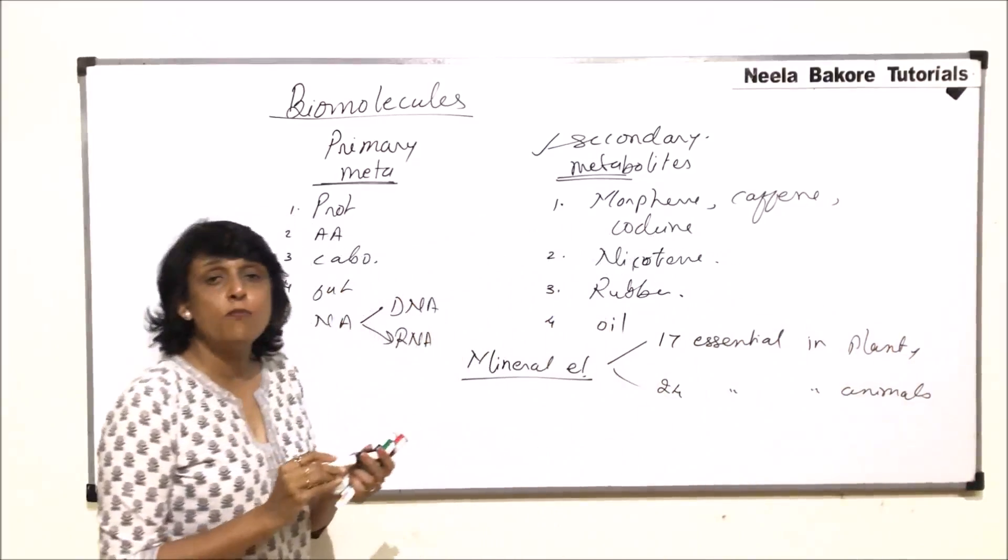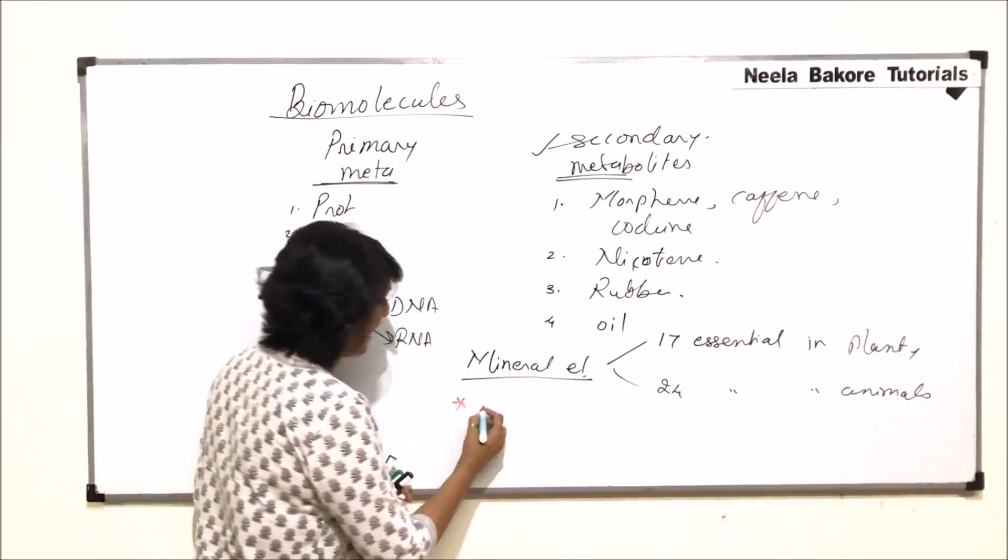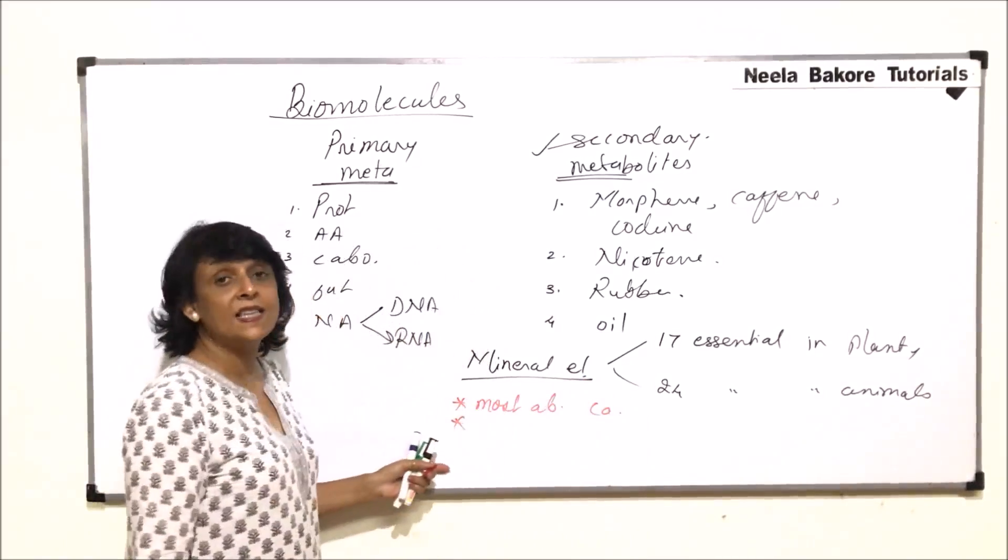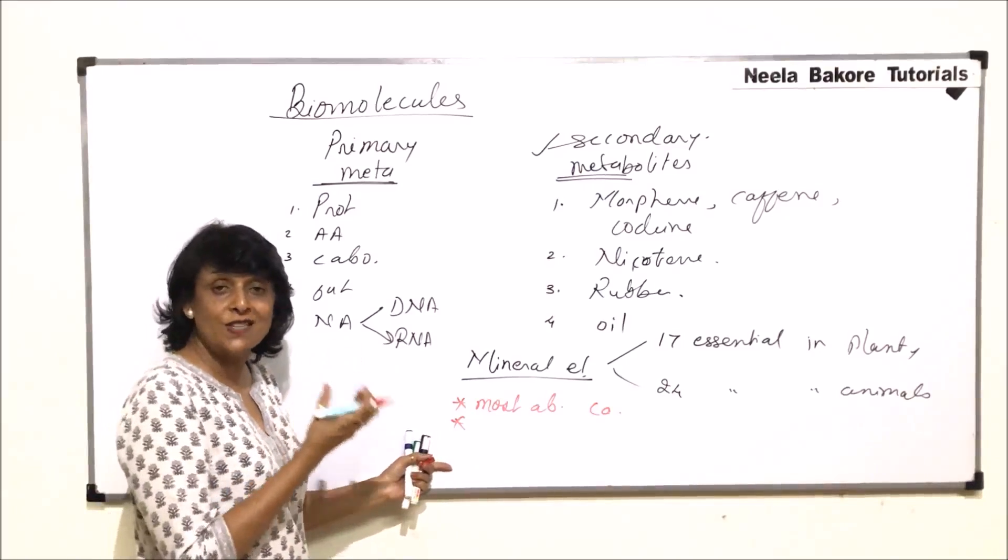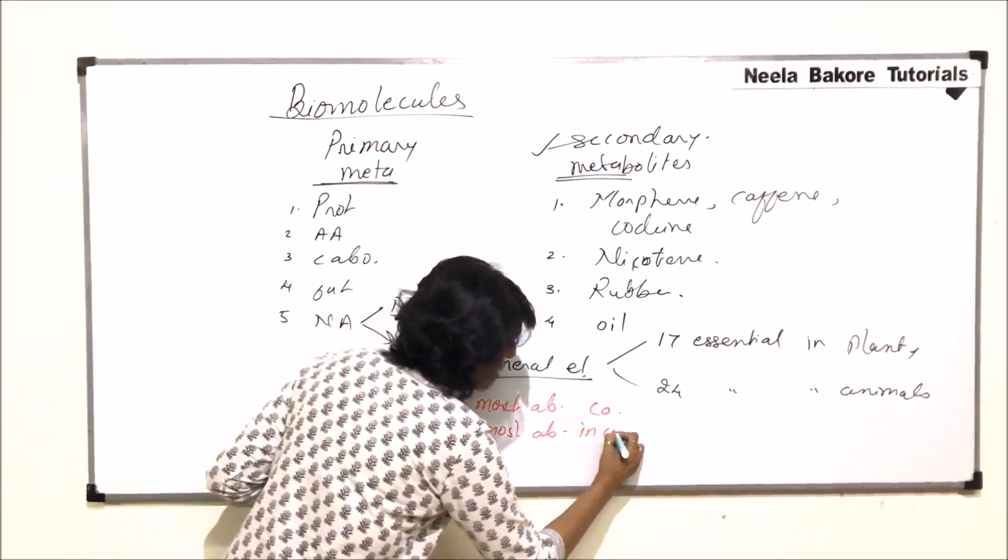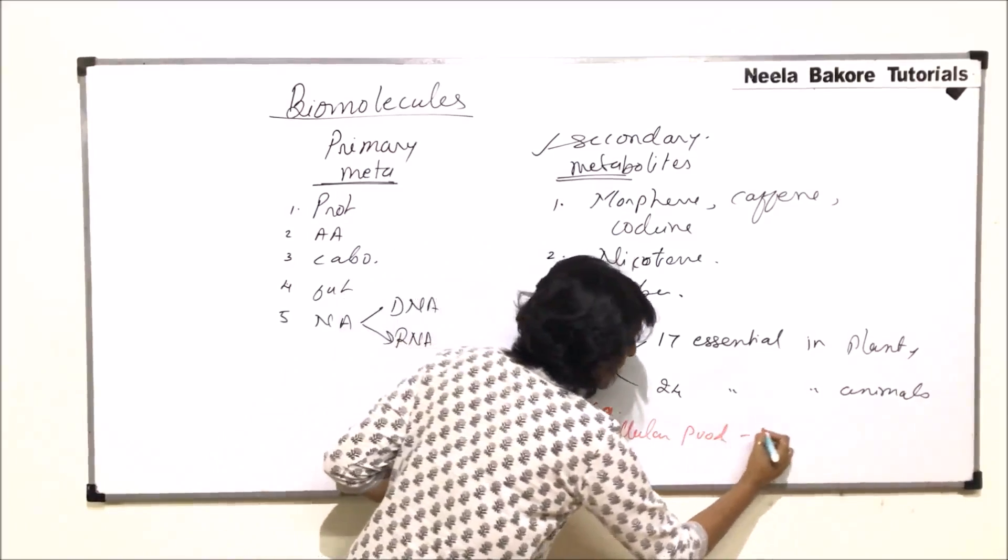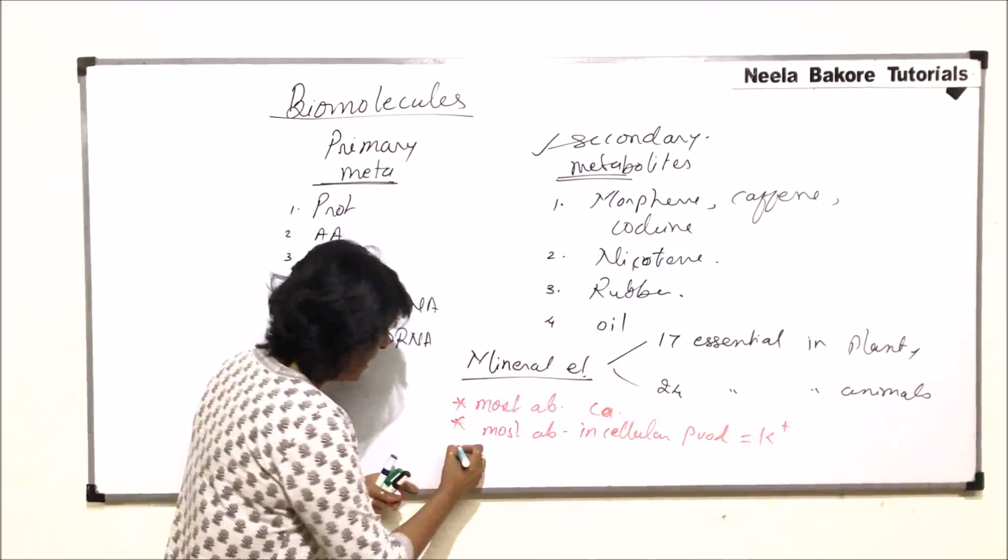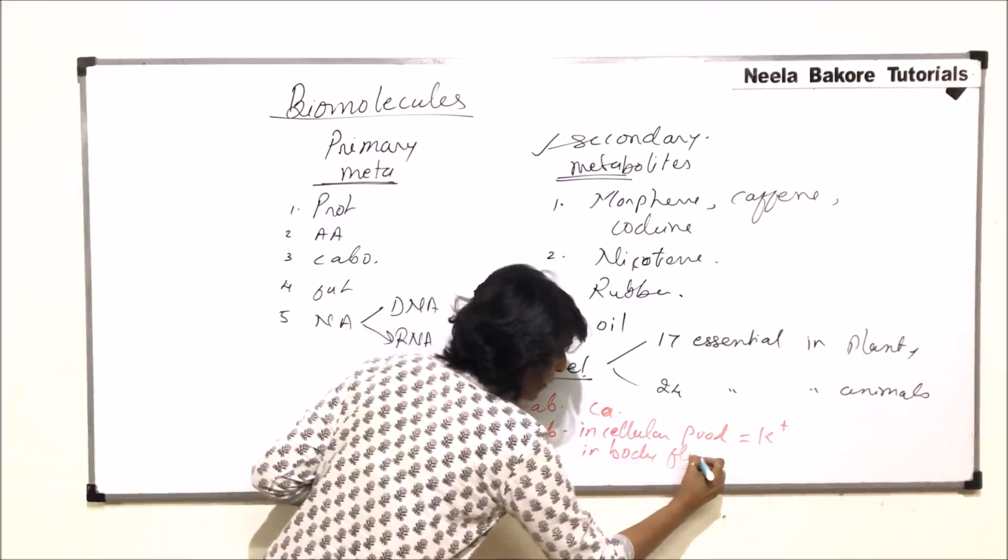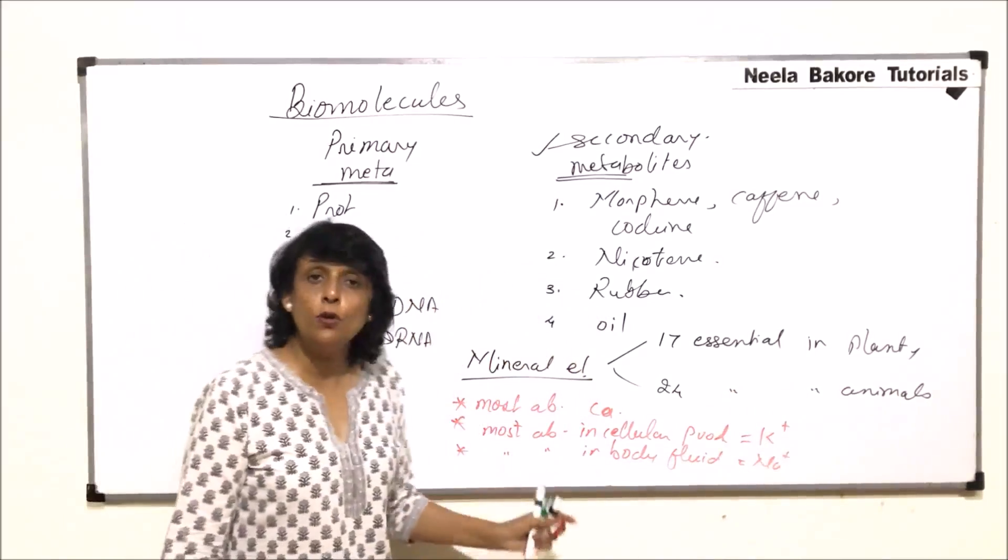We will take some important points here. The most abundant element is calcium. In cellular pool, that means when we are talking of the cytoplasmic content, most abundant in cellular pool is potassium. And the most abundant in body fluid is sodium ion. So these are certain important ones which we have to remember.